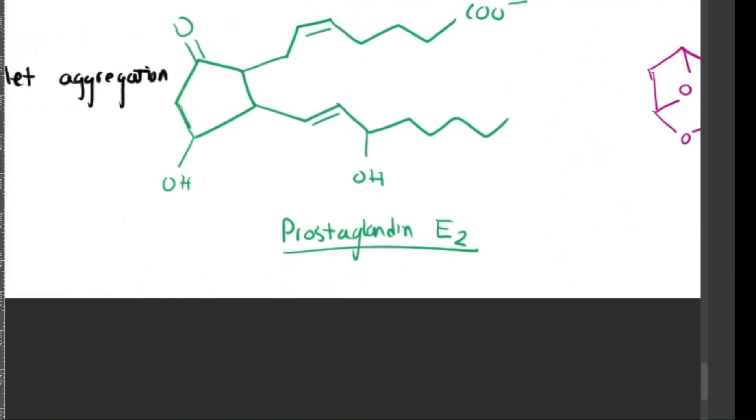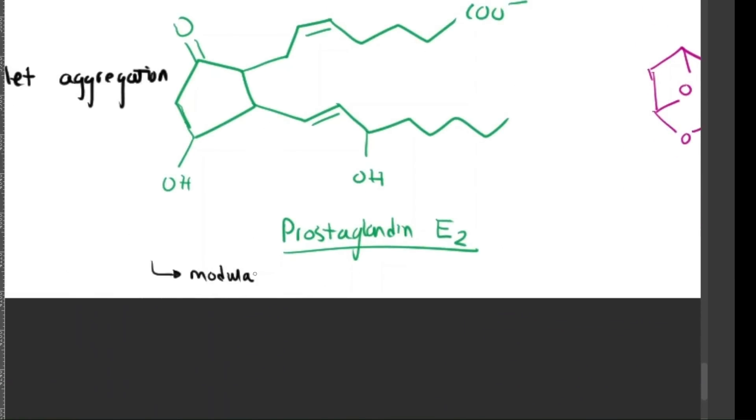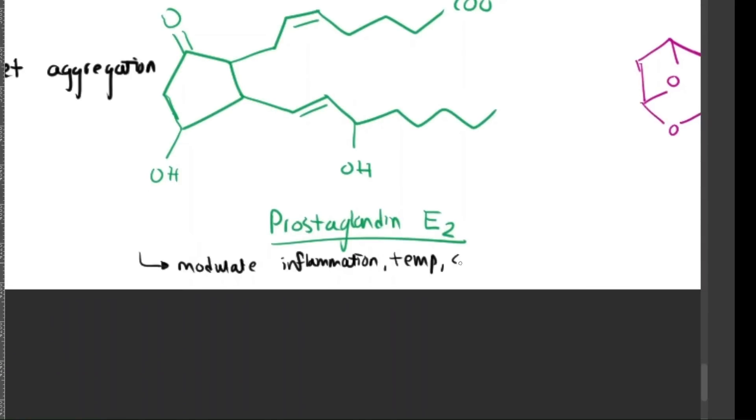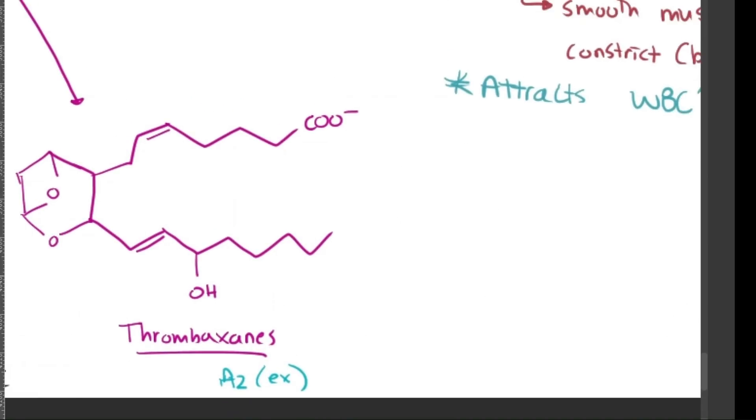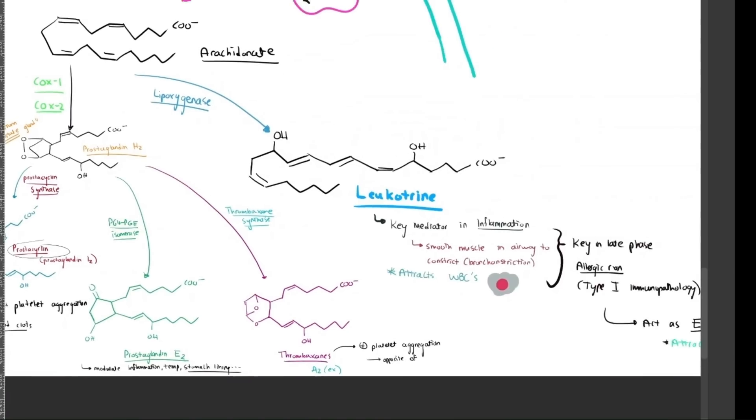Now, prostaglandin E2 here is considered the multitasker and basically is able to regulate fevers and inflammation, triggering the hypothalamus to increase body temperature, protects the stomach lining by stimulating mucus production, and regulates smooth muscle contraction. Thromboxanes here are considered the blood clot promoter, so they increase platelet aggregation, help constrict blood vessels and reduce bleeding, and they work in this antagonistic mechanism to prostacyclin.